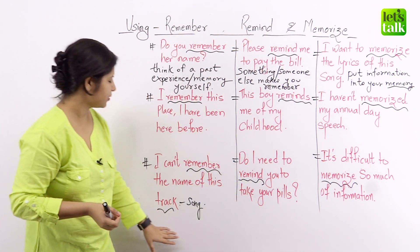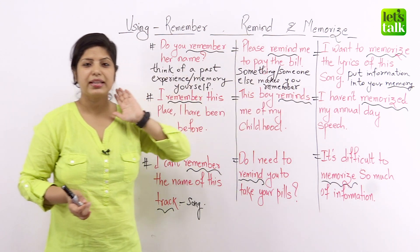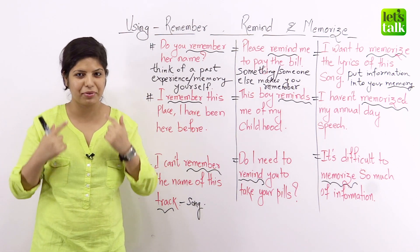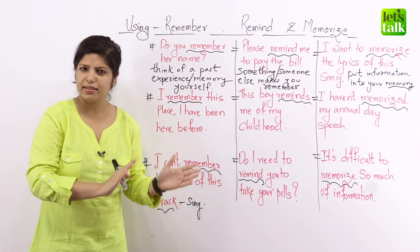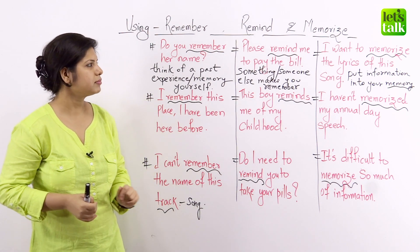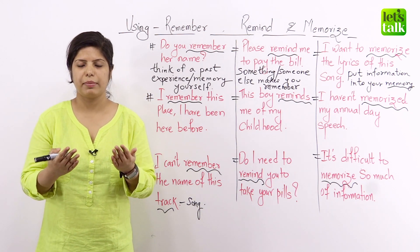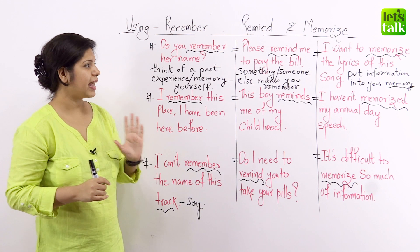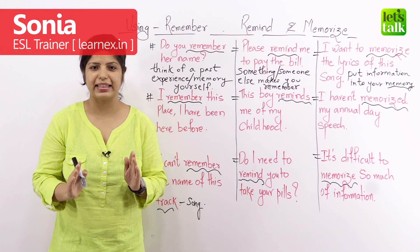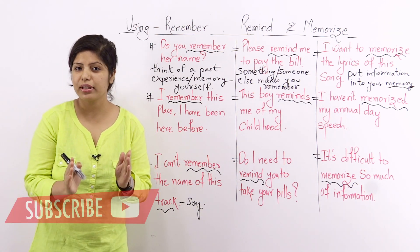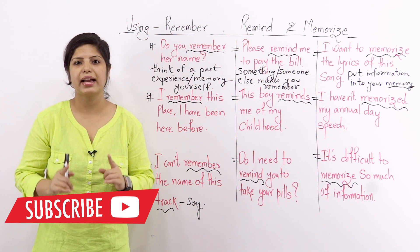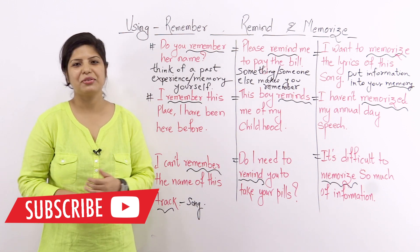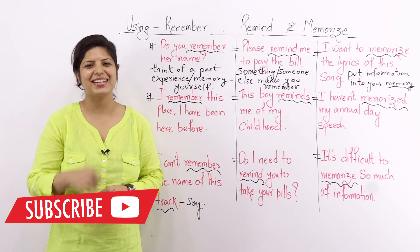So here we are — different words: remember, remind and memorize. Let's do a quick recap. Remember is when you yourself try to think of a past experience or a memory. Remind is when something else or someone else makes you think of something. And memorize is when you try to put some information — maybe from a book or from the internet — into your memory. Make sure that whenever you use them, you use them very distinctively. I hope you've enjoyed watching this lesson. I'll be back soon with something new. Till then, take good care of yourselves. Bye-bye.